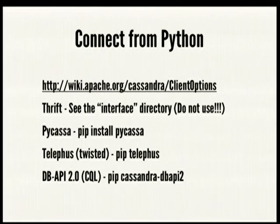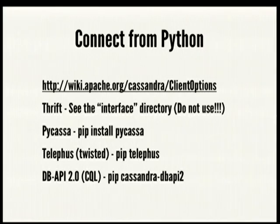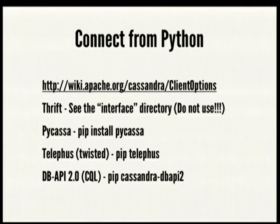For a native Python client, PyCassa is the one I'm going to talk about today. There's also Telefus if you have a Twisted app. And then there's a new client called cassandra-dbapi2, which implements the Python DB-API 2.0 on top of a new CQL query language being developed as a new interface for talking to Cassandra. That DB-API compliant interface uses the CQL interface, which doesn't have all the functionality of the Thrift interface yet, but it's getting there.